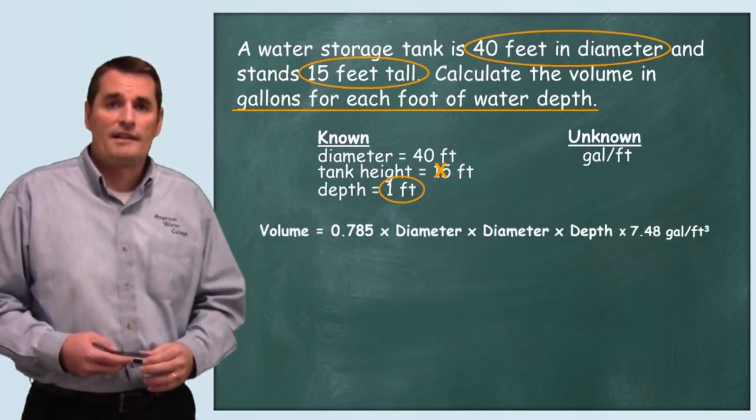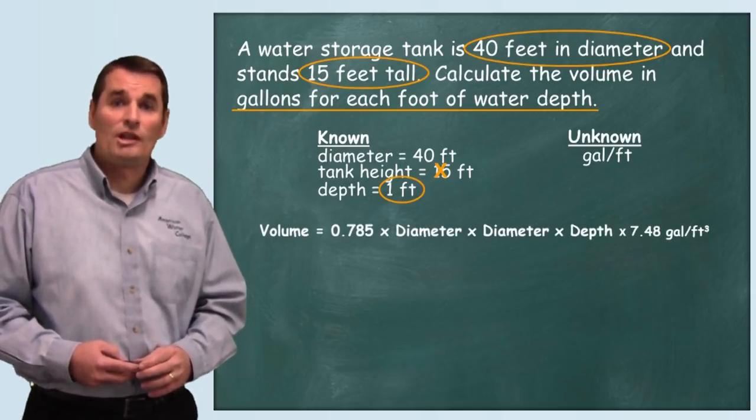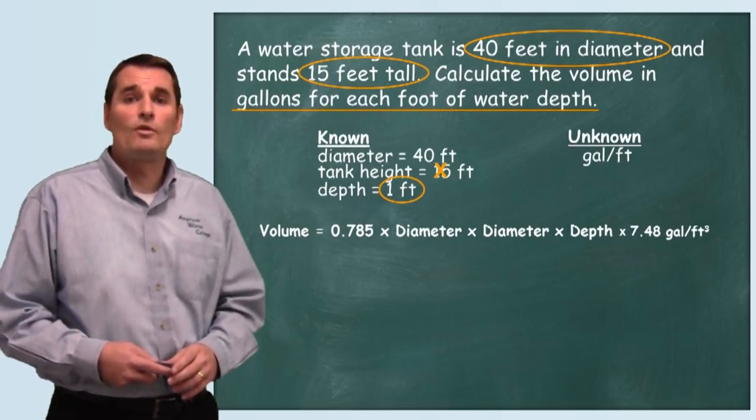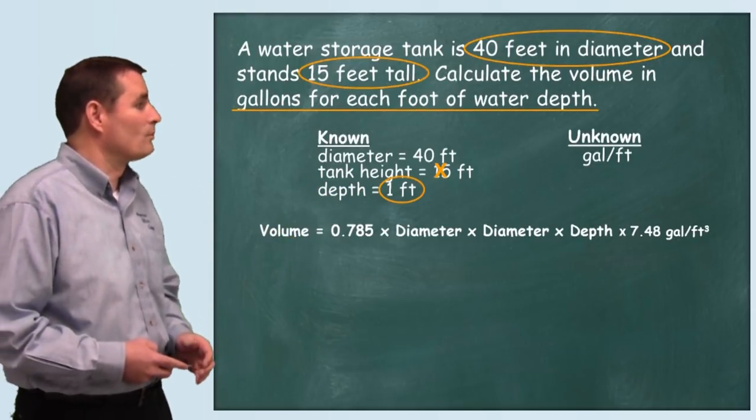The formula we're going to use for finding the volume is 0.785 times the diameter times the diameter times the depth times 7.48 gallons per cubic foot. You can see that written on the board.